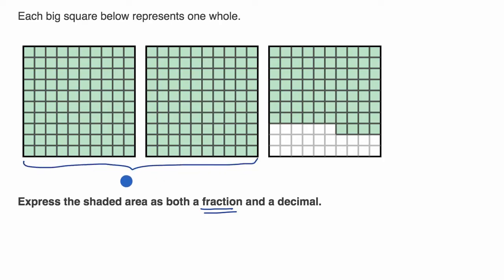this is two holes. Now this third hole is only partially filled in, and we can see that it has been divided into hundredths. You can see it's a 10 by 10 grid. So each of these squares represent one hundredth of a whole. And how many of these hundredths are filled in?